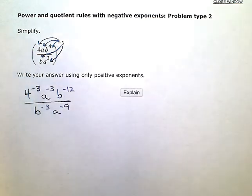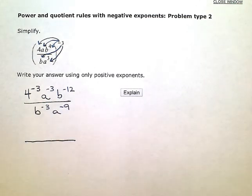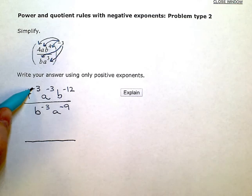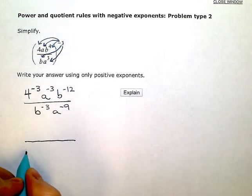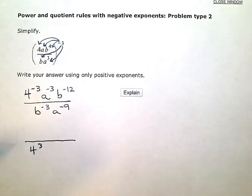So, this fraction here, when I flip everything, the 4, since it has a negative exponent, is going to go from the numerator to the denominator. And when I do that, I can change the sign on the exponent, so now it'll be positive.